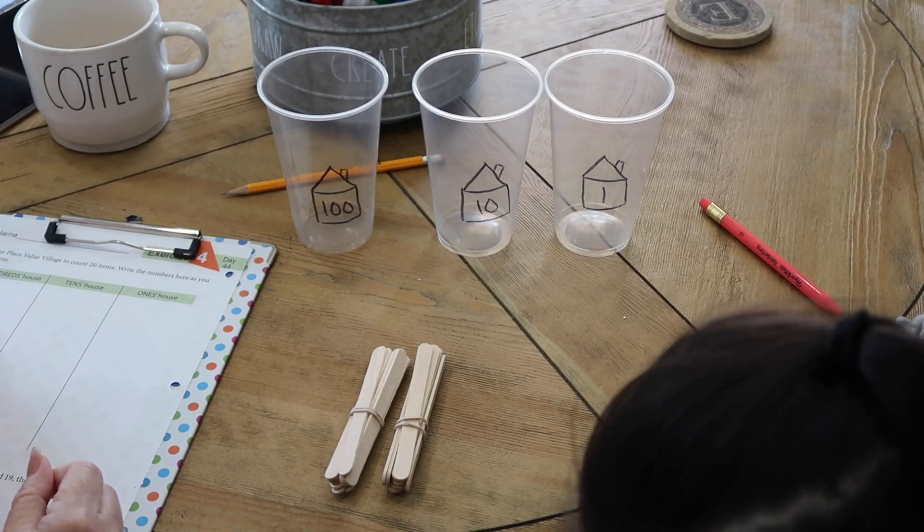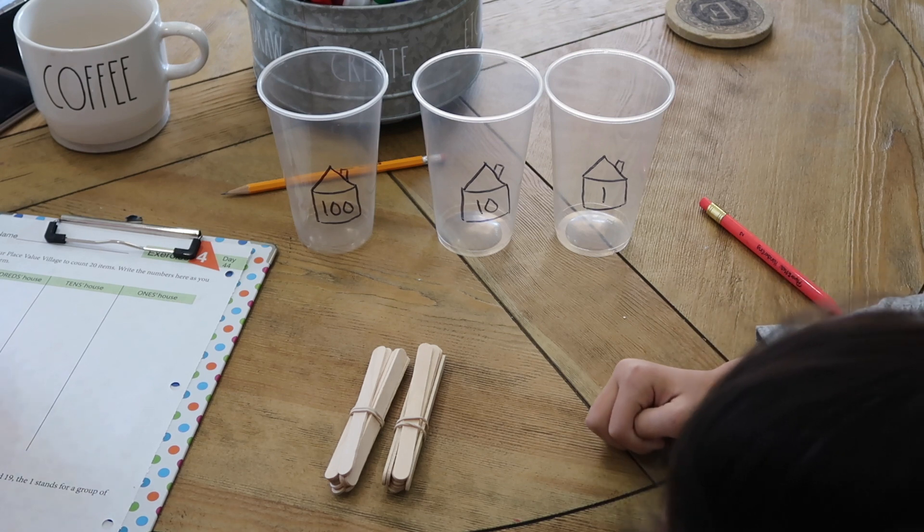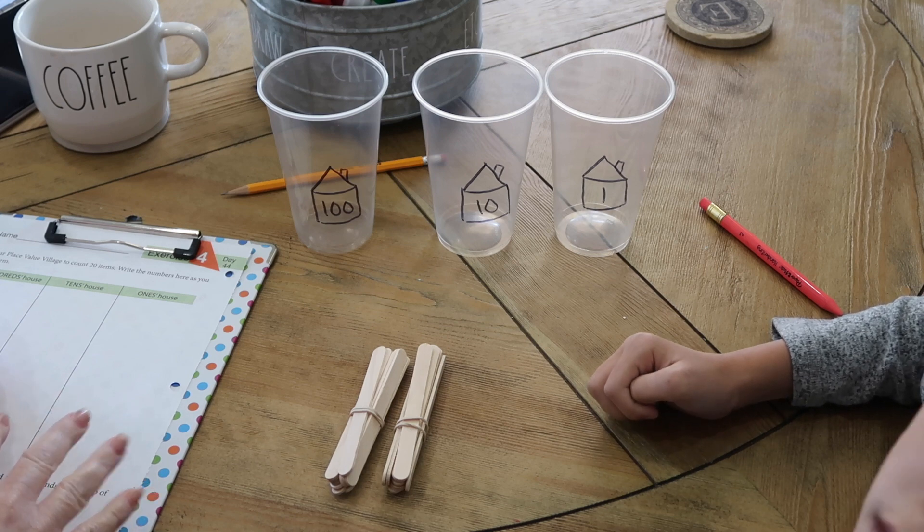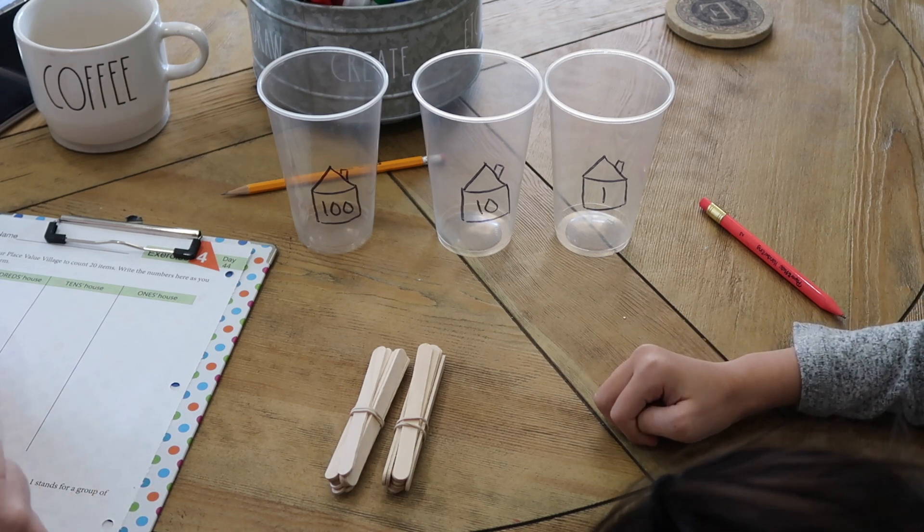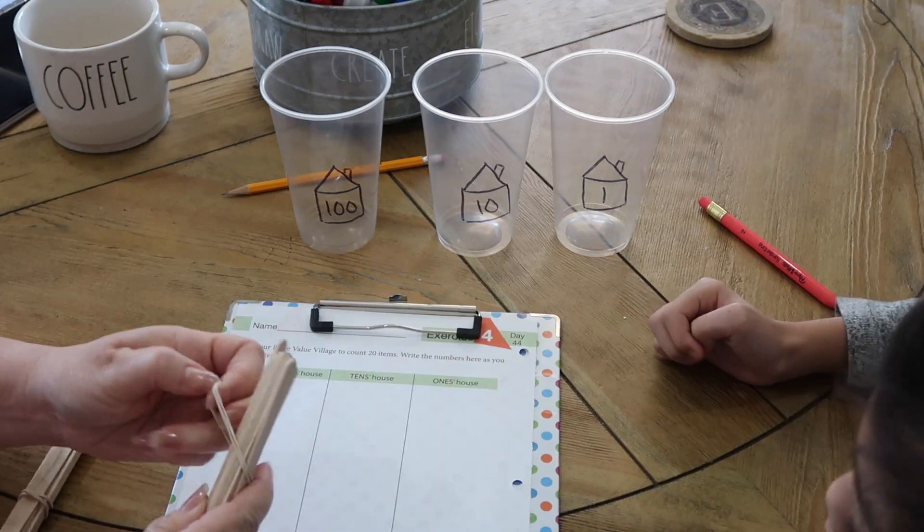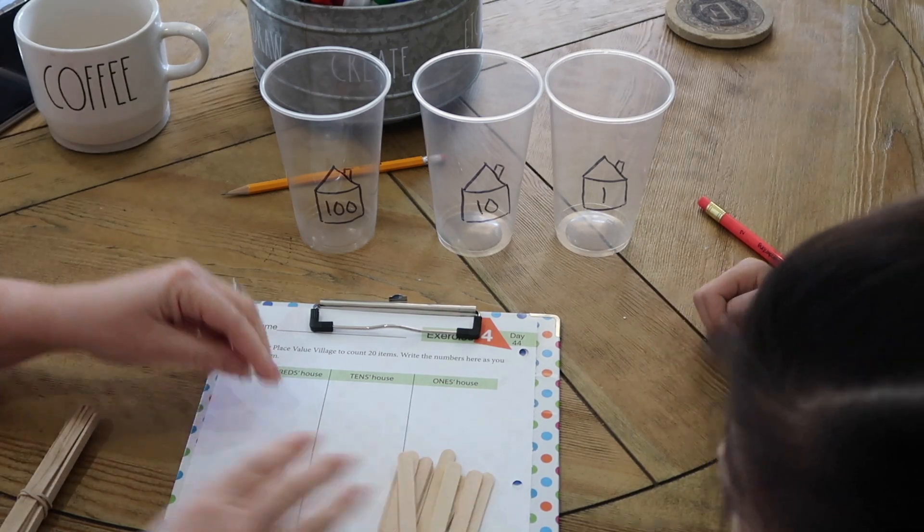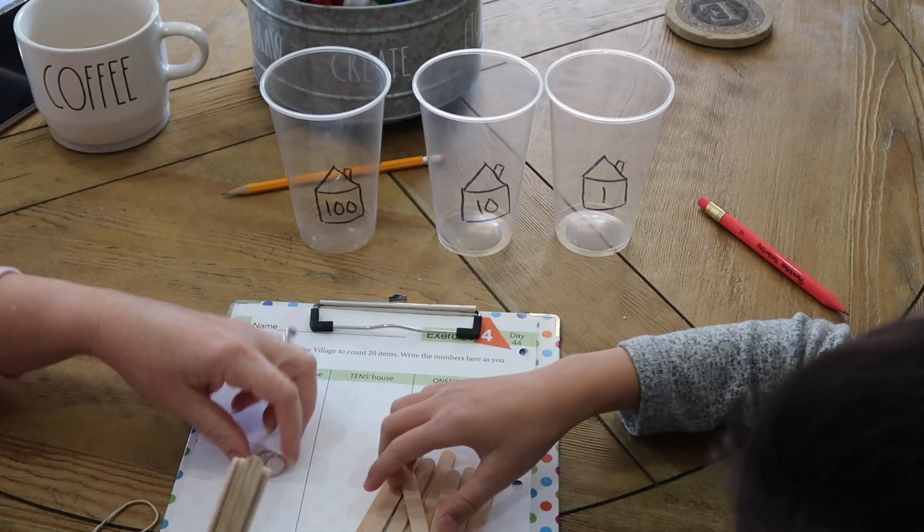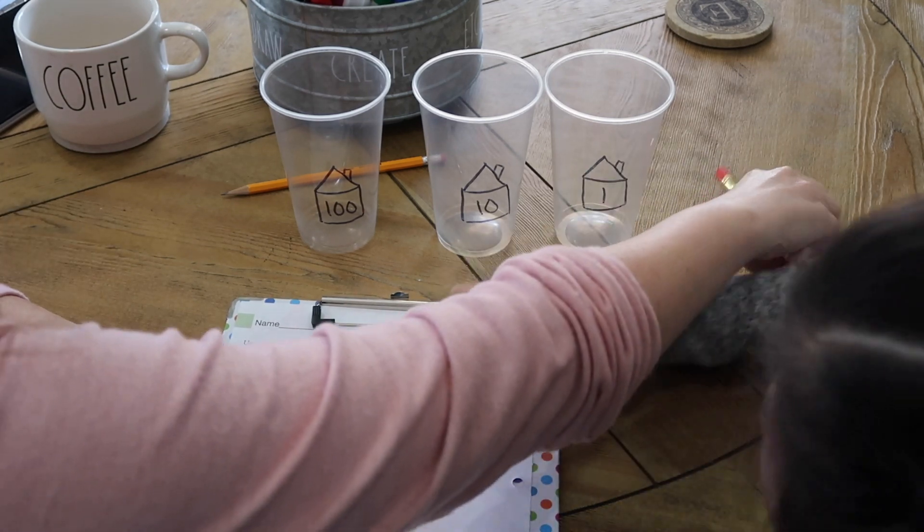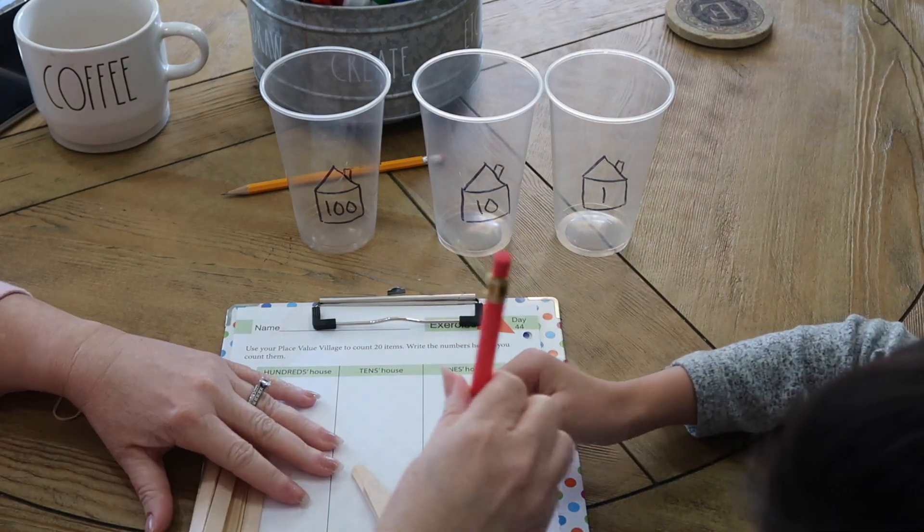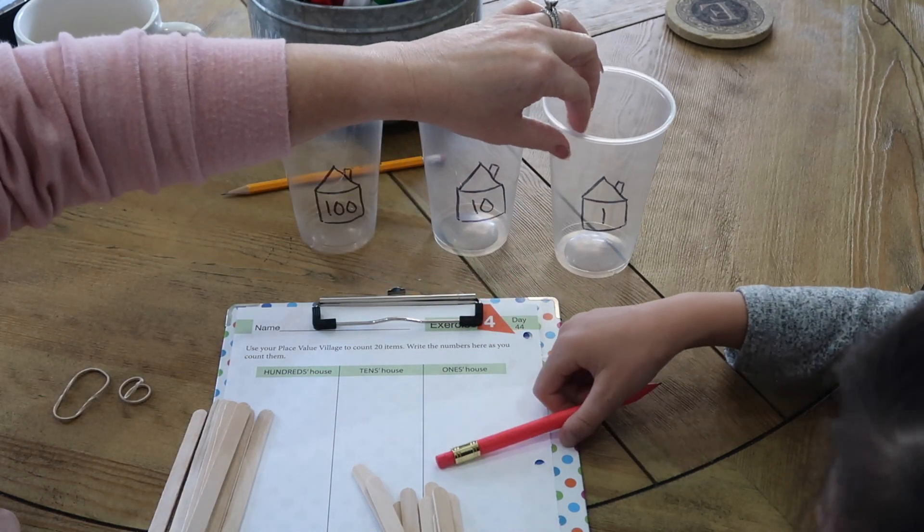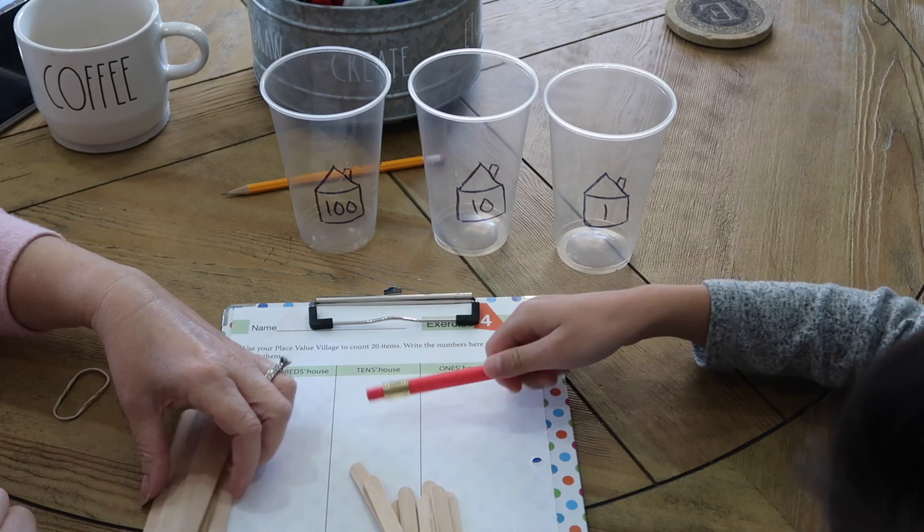Okay, we're on day 44, and I just wanted to show an example of a hands-on activity. This is still our review week. This is working on place value, a review of the numbers 1 through 20 and place value. All right Sophie, it says use your place value village to count 20 items. We like to use popsicle sticks instead of beans because it's just easier for us. So here's what we're going to do. Can you go ahead and count? How many, first of all, how many ones can go in the ones house? Nine.